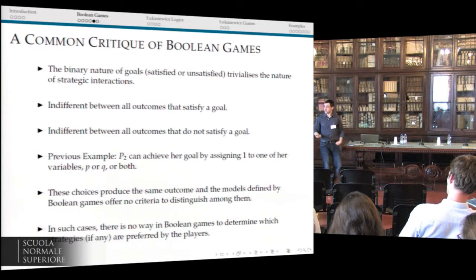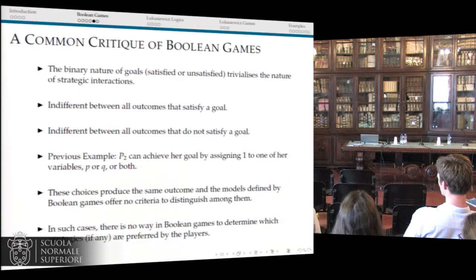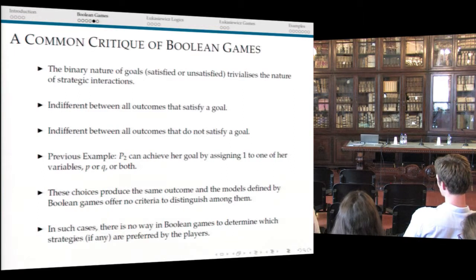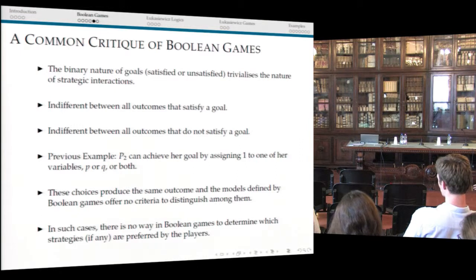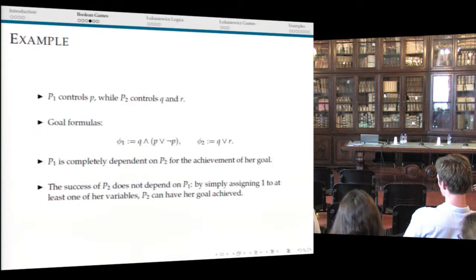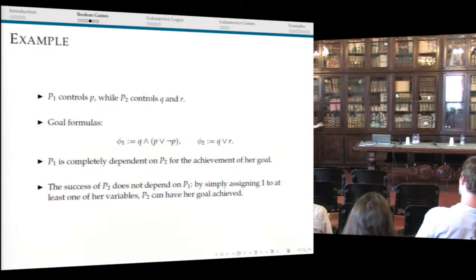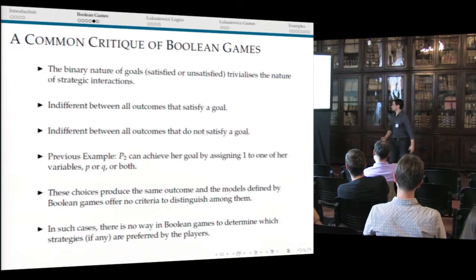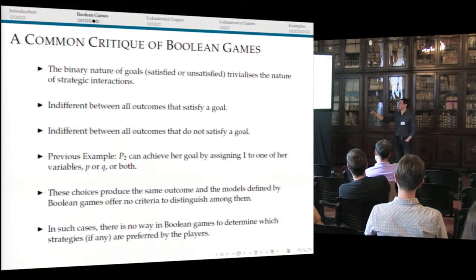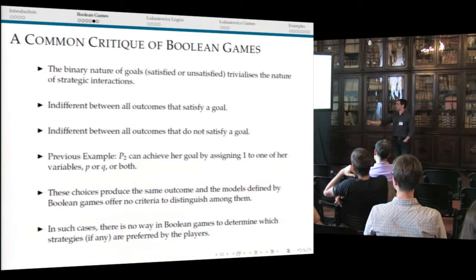This is important because it allows us to build a critique of the Boolean games approach. The binary nature of goals trivializes the nature of the strategic interaction — we're talking about achieving a goal or not, simple as that. But most of all, we are indifferent between all outcomes that satisfy a goal, and also indifferent between all outcomes that do not satisfy a goal. As long as I satisfy my goal and make my formula true, it doesn't matter which strategic choice I make. In the previous example, you can realize your goal if you assign one to Q or R or to both. What helps you discriminate which choice you should make? You don't know — there's no way to know, because what matters is simply for you to achieve your goal. In Boolean games, there is no way to determine which strategies are preferred by the players.